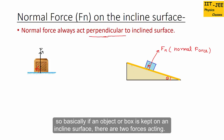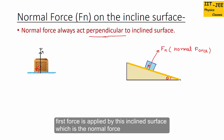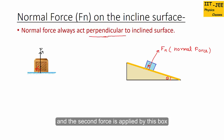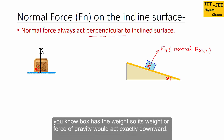So basically, if an object or box is kept on an inclined surface, there are two forces acting. The first force is applied by the inclined surface, which is the normal force. The second force is applied by the box's weight — the force of gravity — which acts exactly downward.